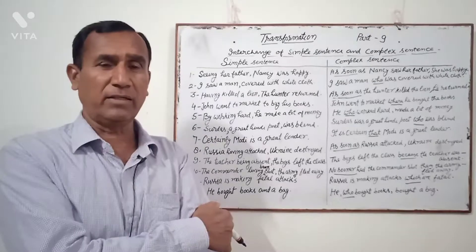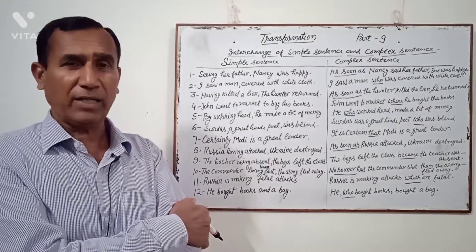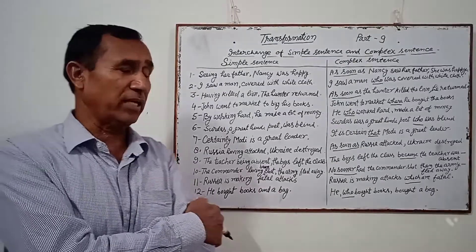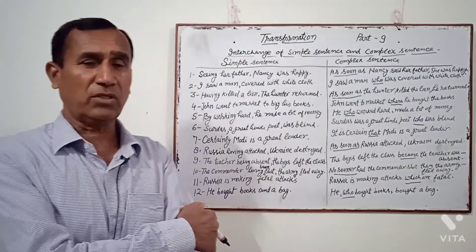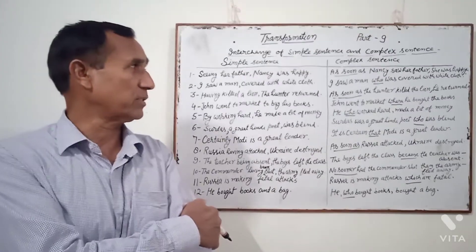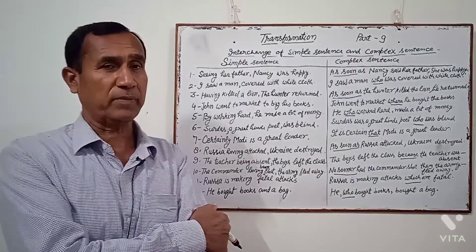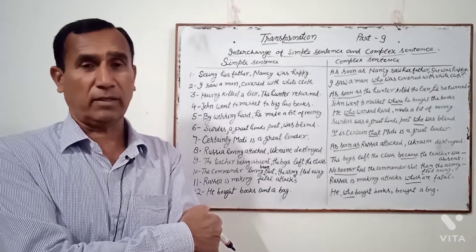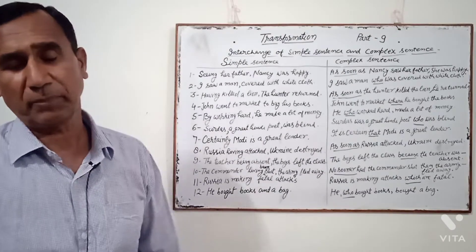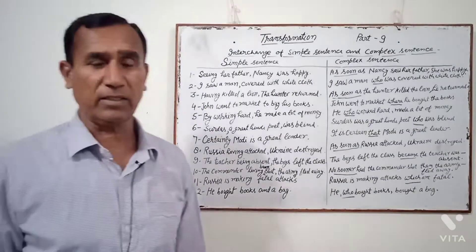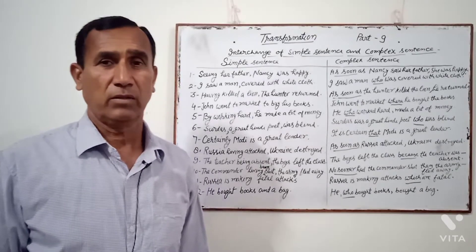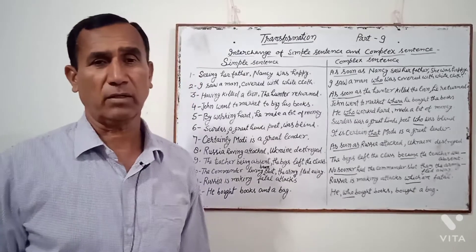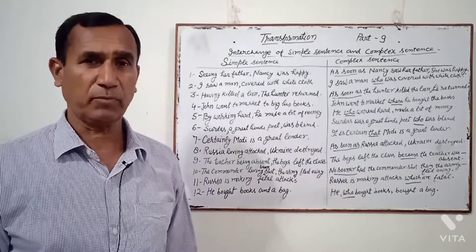Example: "Having killed a lion, the hunter returned." Complex: "As soon as the hunter killed a lion, he returned." Another example: "John went to market to buy his books." Complex: "John went to market where he bought his books."